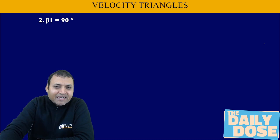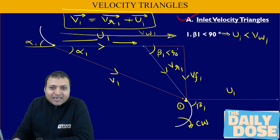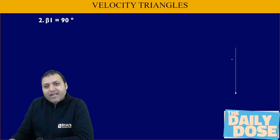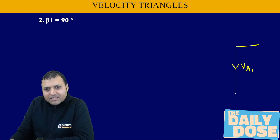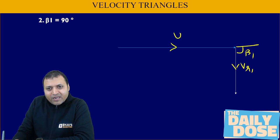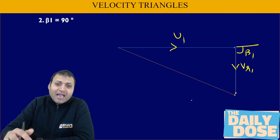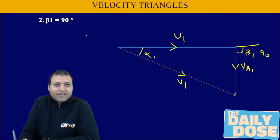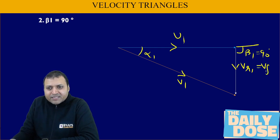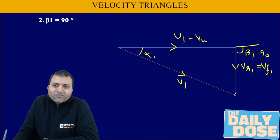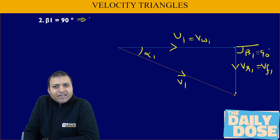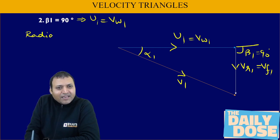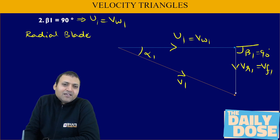For beta 1 equal to 90°, vr1 becomes vertical because beta 1 is the angle made by vr with the direction of blade motion. So vr1 is vertical, u1 points right due to clockwise rotation, and the resultant is v1. Alpha 1 is the guide vane angle and beta 1 is 90°. Resolving v1 into two components gives vf1 vertically and vw1 horizontally. Therefore, beta 1 = 90° implies u1 equals vw1, and we call this radial blade at inlet.